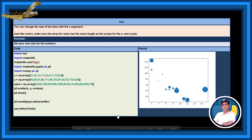Size. You can change the size of the dots with the s argument. Just like colors, make sure the array of sizes has the same length as the arrays of the x and y axis. See, we have learned this before in earlier chapters.